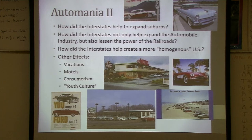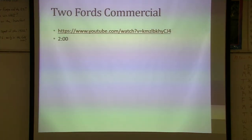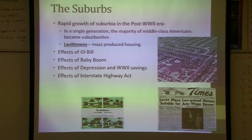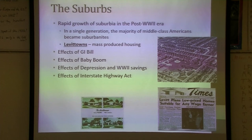Vacations expanded because of the interstates. Motels emerged — a motel has doors on the outside — where it used to be hotels. When crime rates went up in the 60s and 70s, we got back to the trend of hotels. Cars and consumerism grew — having to have the newest car and everything that goes with it. Youth culture continued to grow. Suburbia, the middle class family, and cars are stereotypes we think of from this era.